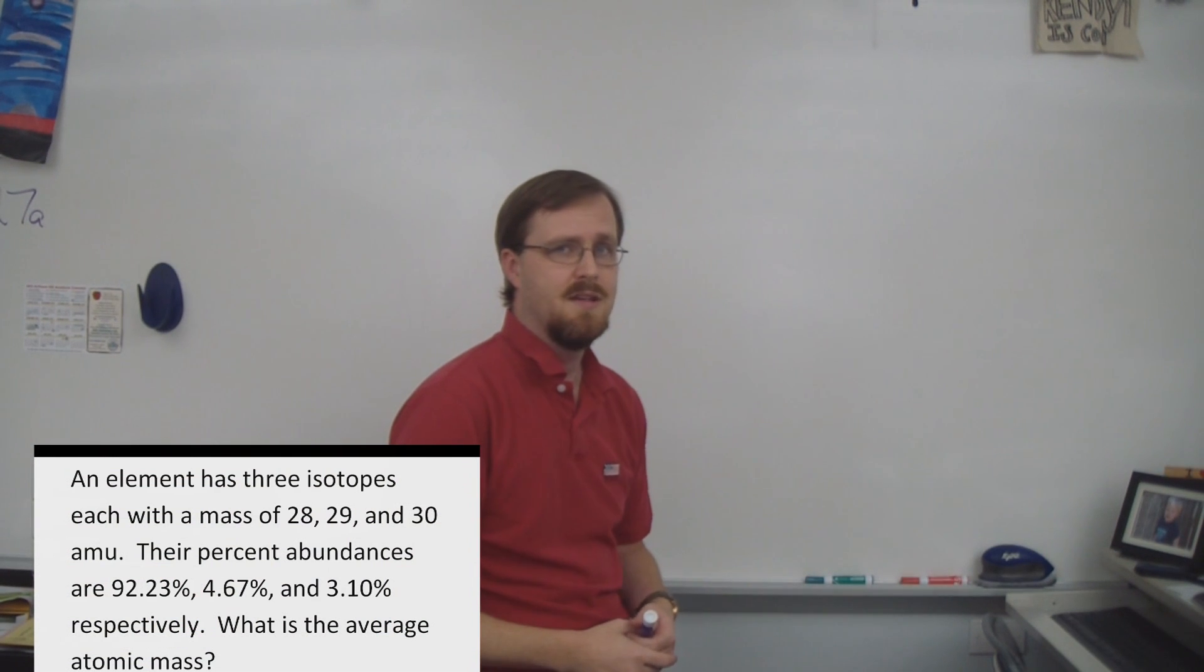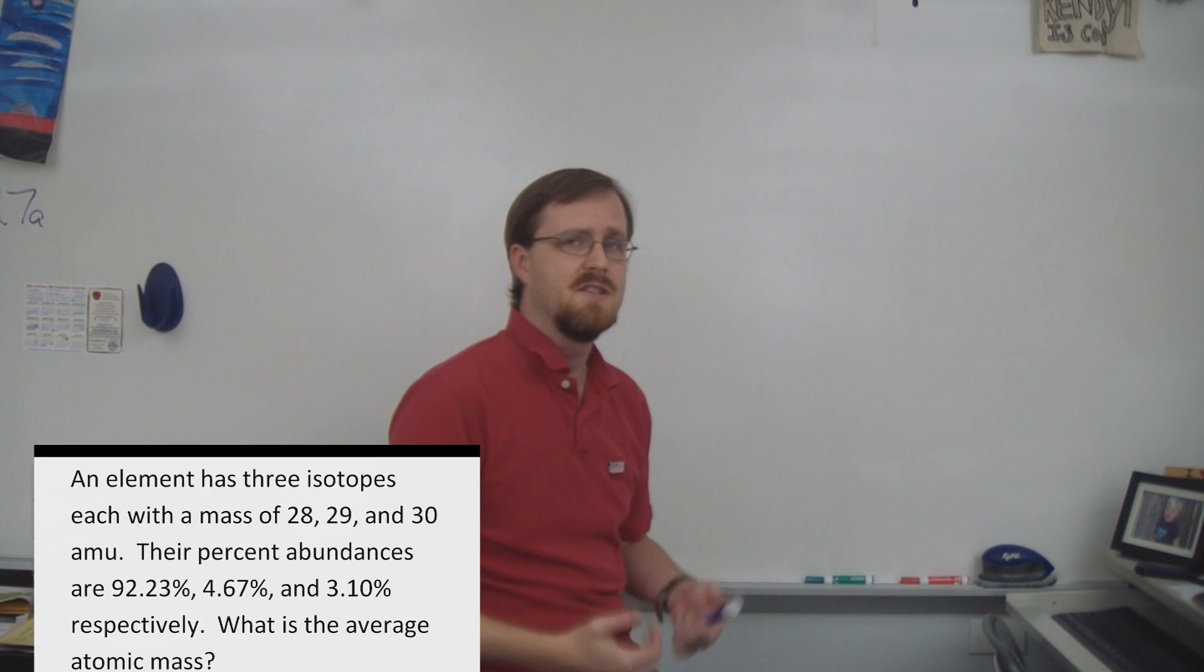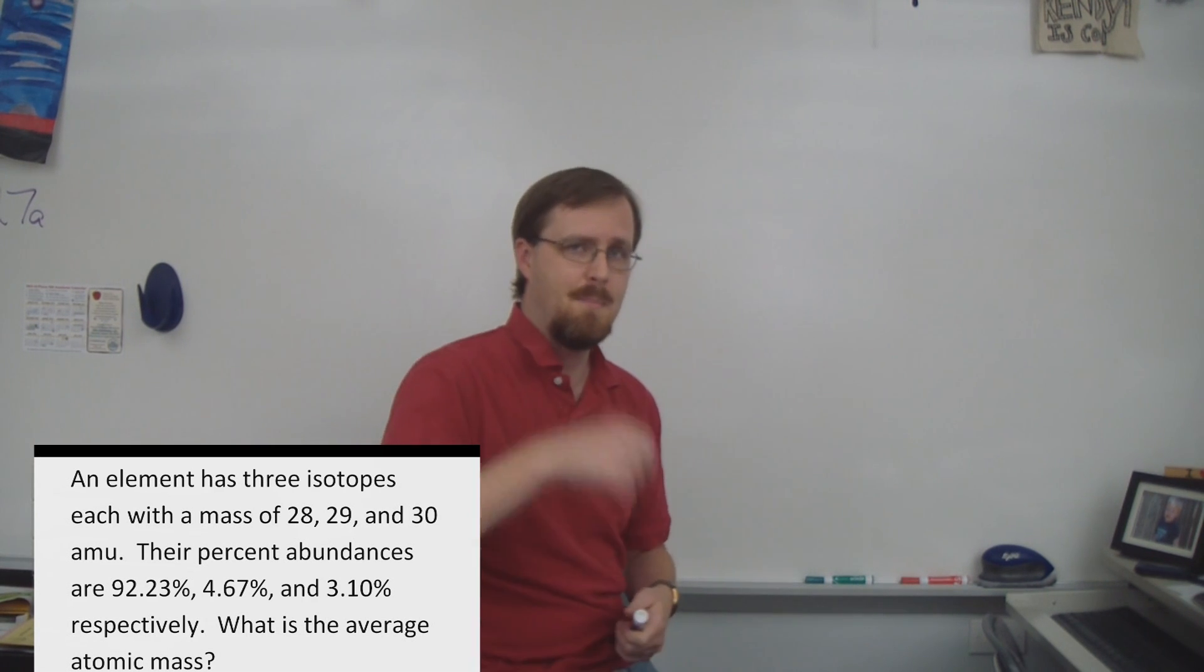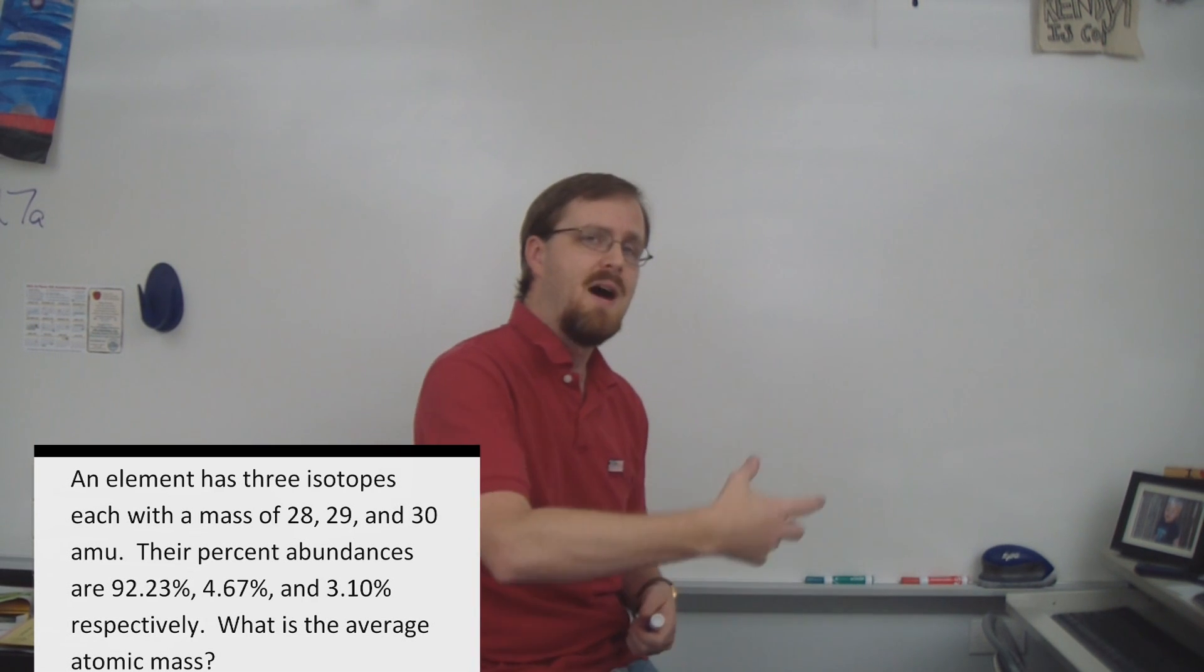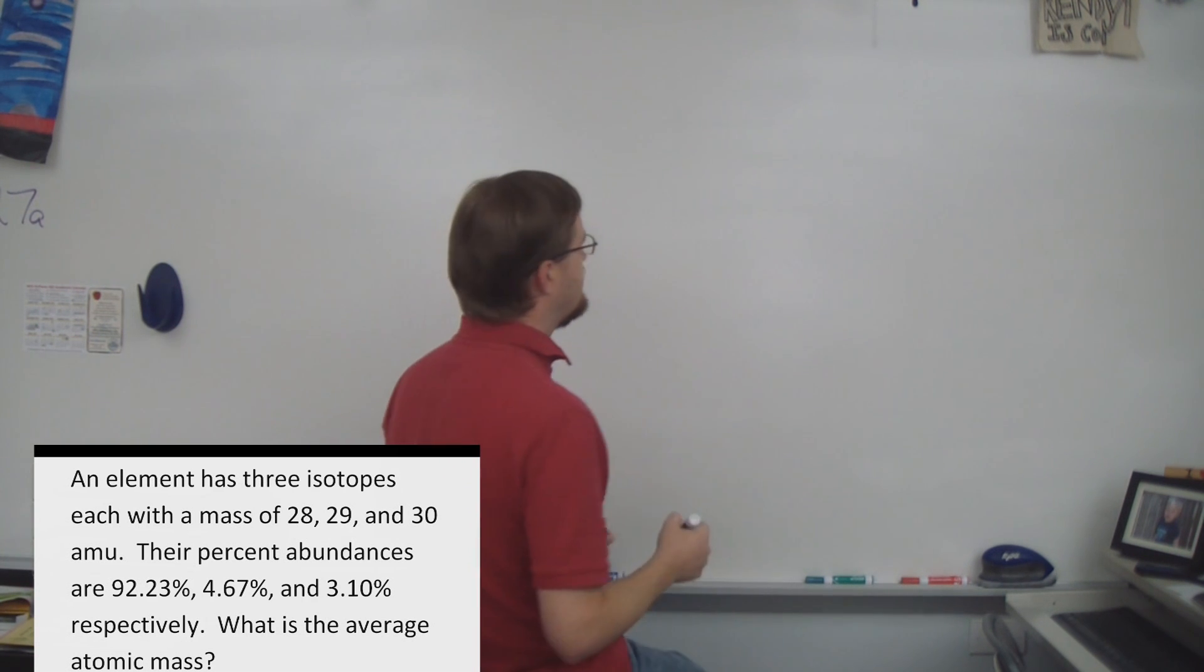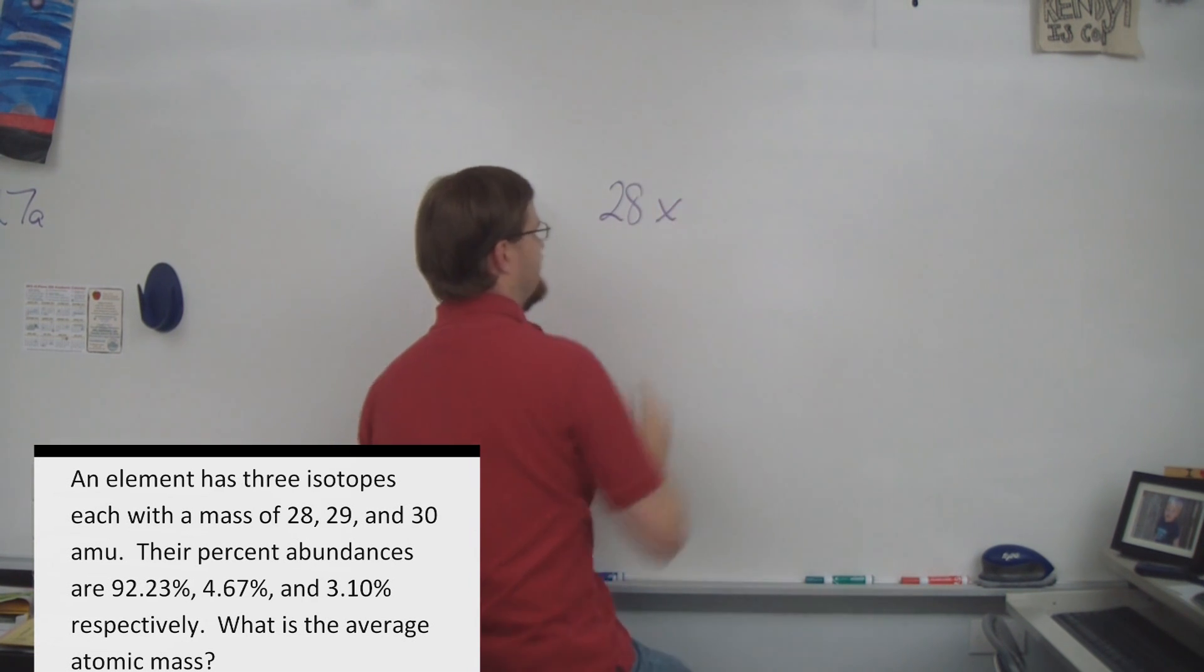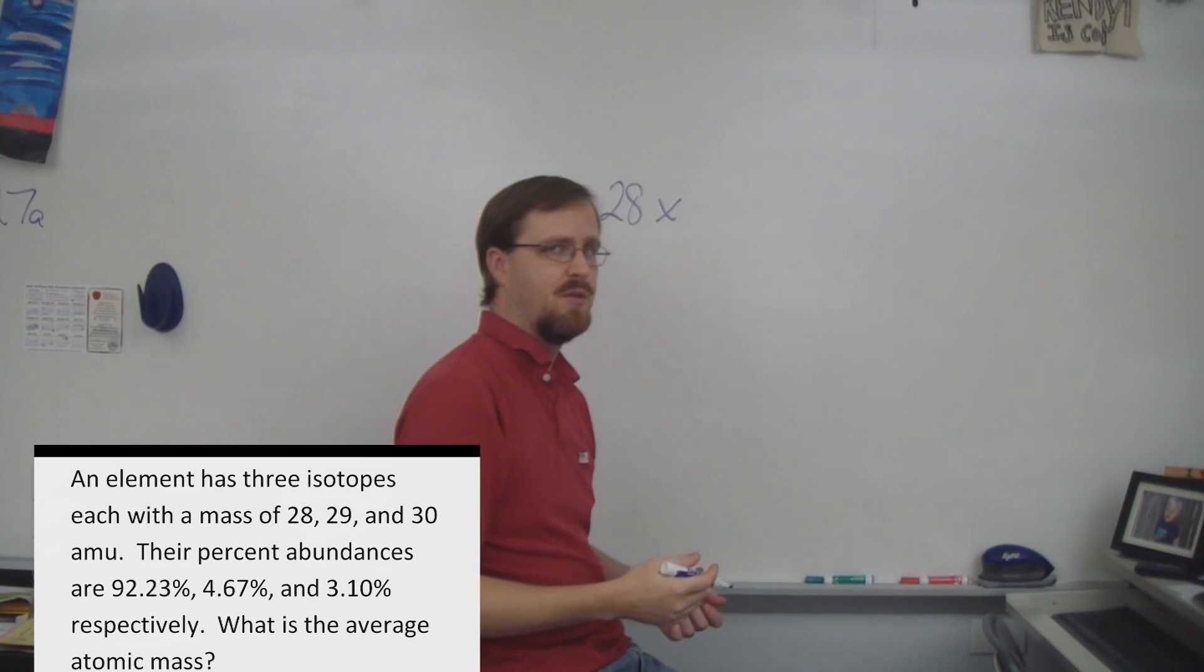So remember, step one is to multiply. But what exactly are we multiplying? Well, very simply, we are going to multiply the mass of each isotope by its respective percent abundance. So in this particular example, we are going to take 28 times its percentage, which is 92.23.